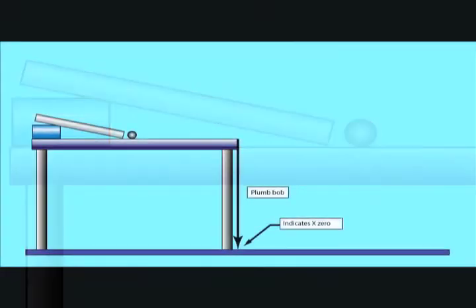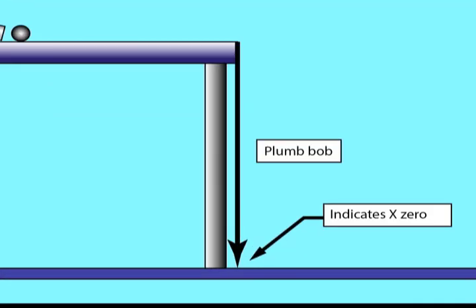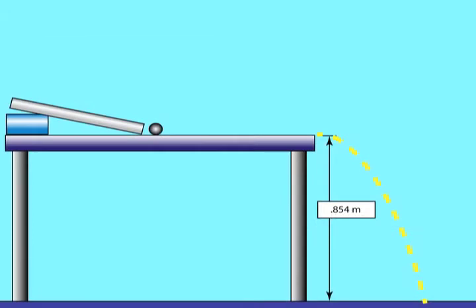Using a plumb bob, find the edge of the table and locate its position on the floor. This will be useful to identify the x0 position located where the ball left the edge of the table and will also be used with later measurements. We will also need to measure the height of the table in meters.